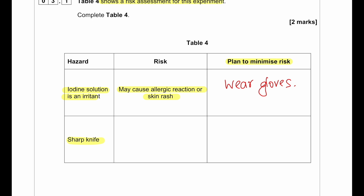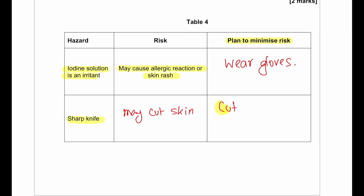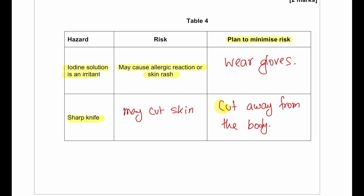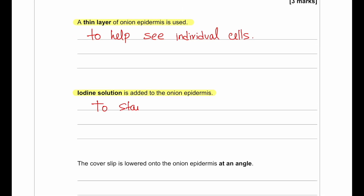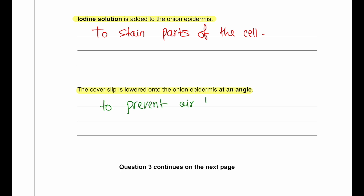For the sharp knife risk, you can cut your skin — to minimize the risk, cut the onion away from the body, or cut on a chopping board. Give a reason for each step: a thin layer of onion epidermis is used so the student can see individual cells. Iodine solution is added to stain parts of the cell. The cover slip is lowered at an angle to prevent air bubbles.